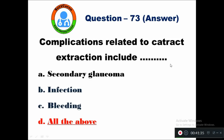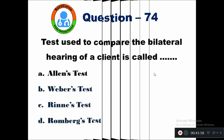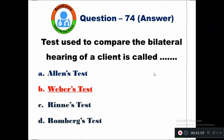Question 74: The test used to compare the bilateral hearing of a client is called — option A Allen's test, B Weber's test, C Rinne test, D Romberg's test. The test used to compare bilateral hearing of a client is called Weber's test.